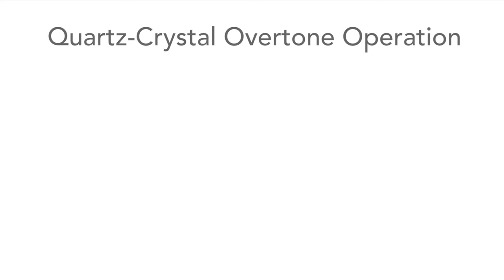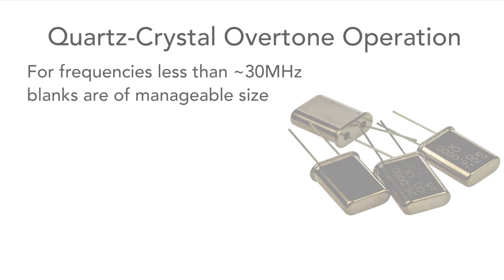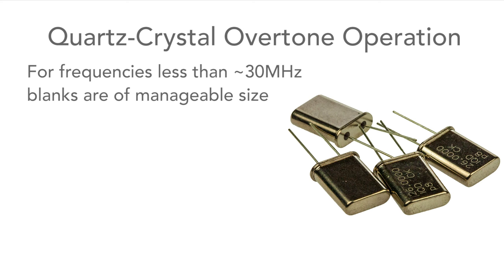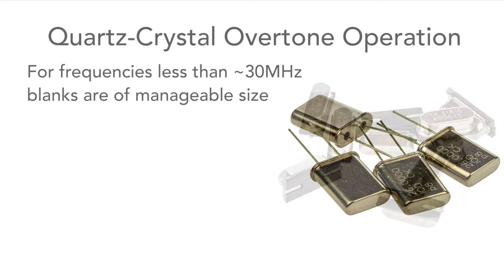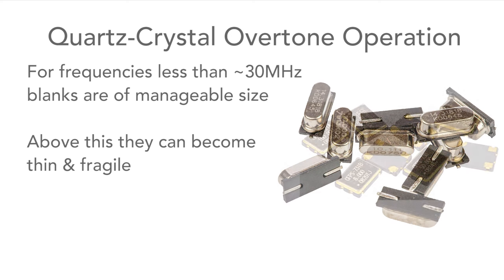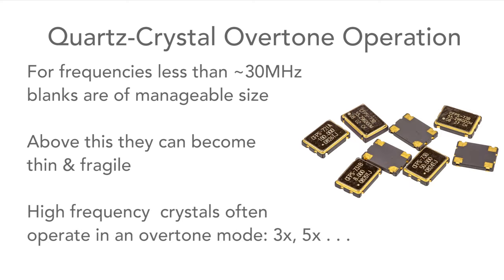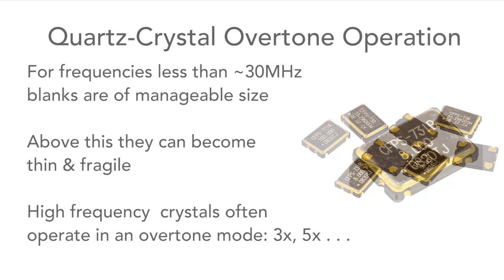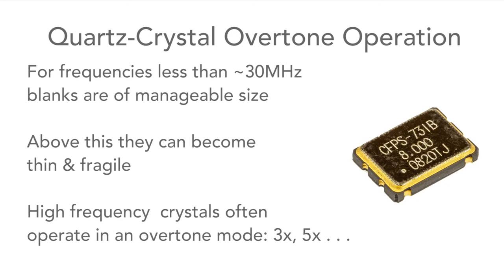It's also worth noting that crystals can operate in an overtone mode. For frequencies up to about 30 MHz the crystal blanks are of a manageable size and they're quite robust, but above this they can become quite thin and fragile, so they often use an overtone mode operating at 3, 5 or more times the fundamental frequency. Although with technology improving all the time, higher fundamental frequencies are often available.